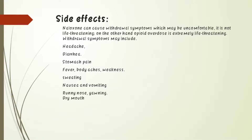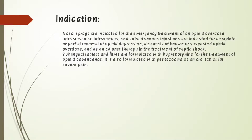Indications: nasal sprays are indicated for emergency treatment of opioid overdose. Intramuscular, intravenous, and subcutaneous injections are indicated for complete or partial reversal of opioid depression, diagnosis of known or suspected opioid overdose, and as adjunct therapy in the treatment of septic shock.